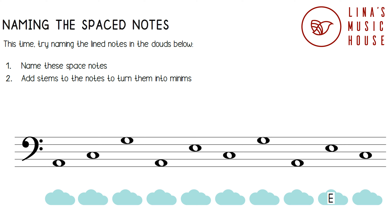The last note is in the second space. The second word in All Cows Eat Grass is Cows, so this is a C note. You have now learned how to name all the space notes in the bass stave.